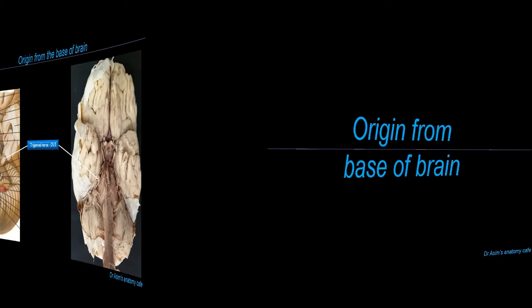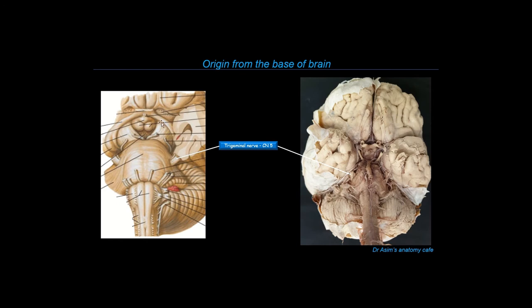As a first step, let's see where the trigeminal nerve originates from the base of the brain. On the left, you can see an illustration of the base of the brain showing the ventral aspect of the pons. You can see the area where the basilar groove is present — that's where the basilar artery, as part of the vertebrobasilar circulation, runs. You can see the transverse pontocerebellar fibers running laterally, passing through the middle cerebellar peduncle on the right and left, entering into the cerebellum. The trigeminal nerve can be seen originating from the ventral surface of the pons on the right and on the left side.